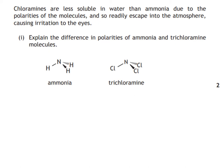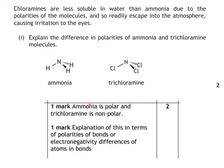Let's have a look at the answers. We've got two chemicals here: ammonia and trichloroamine. They are different by the atoms that are attached to the nitrogen, and that is going to affect the polarity. Ammonia is polar and trichloroamine is non-polar, and that's due to the difference in electronegativity between the atoms in the bonds. The difference in electronegativity for ammonia is quite great, whereas for trichloroamine it is not so great, and therefore this is considered to be a non-polar chemical.